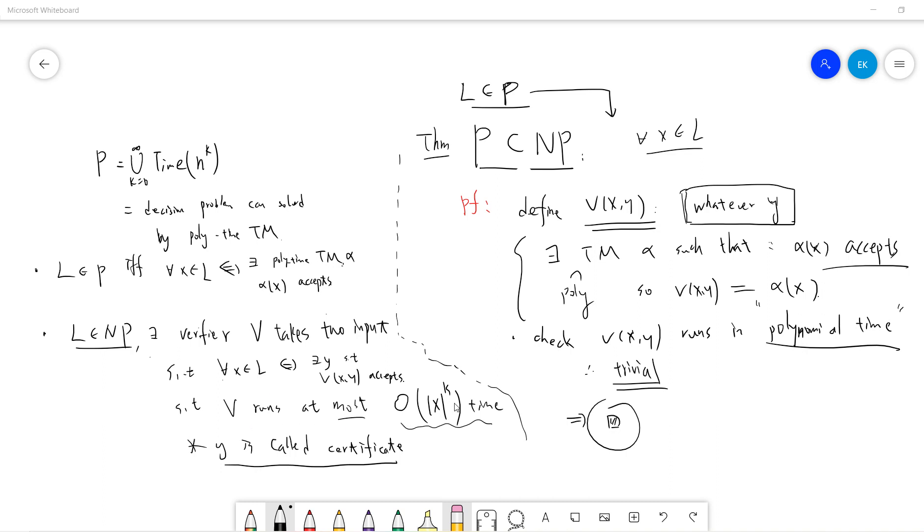So, such that v runs at most all x k to a power time, right? So, you can check the certificate in polynomial time. Okay, and why it's called a certificate.